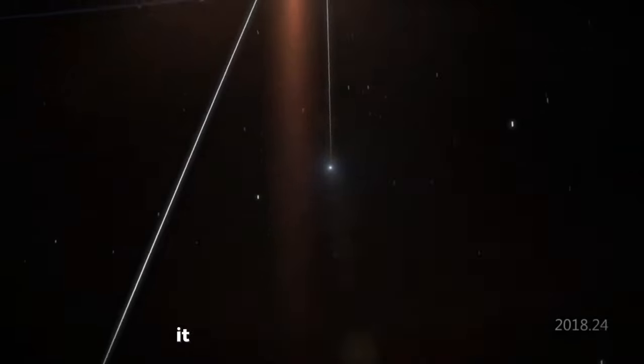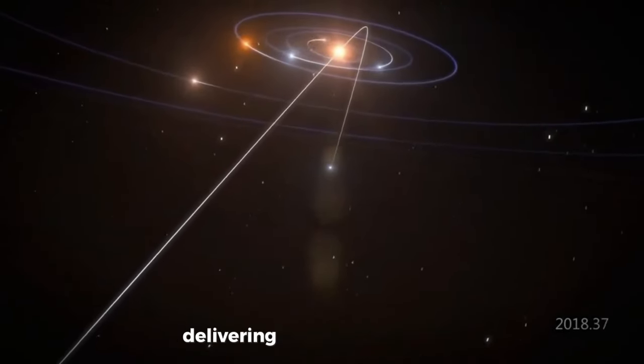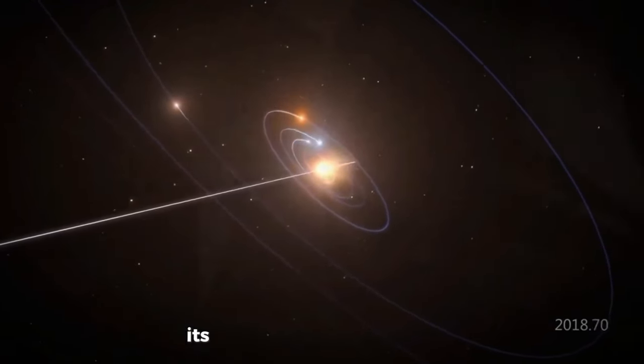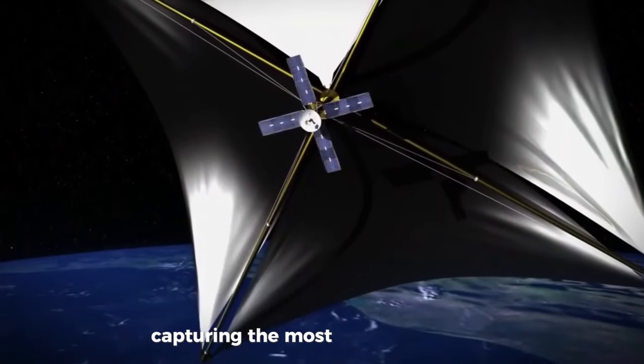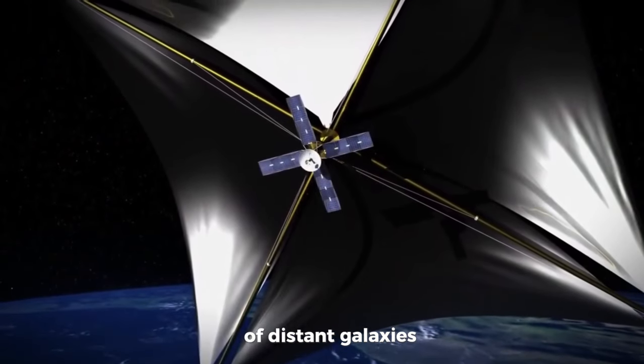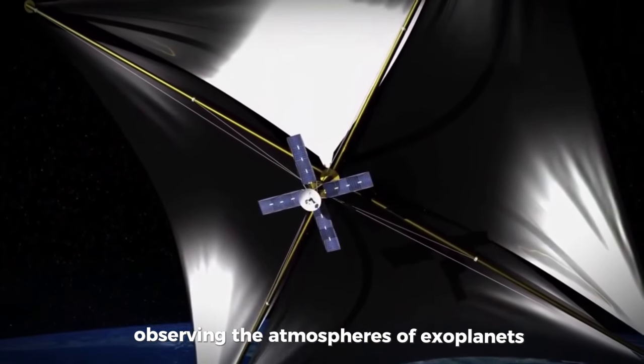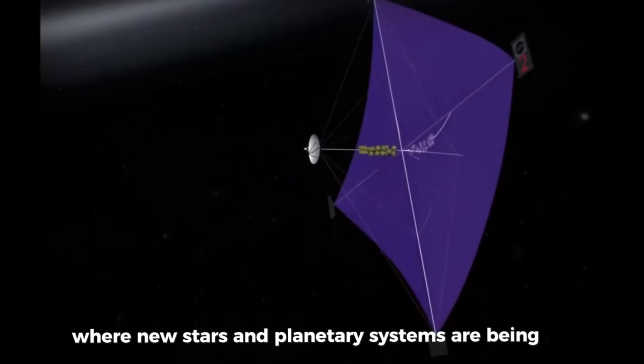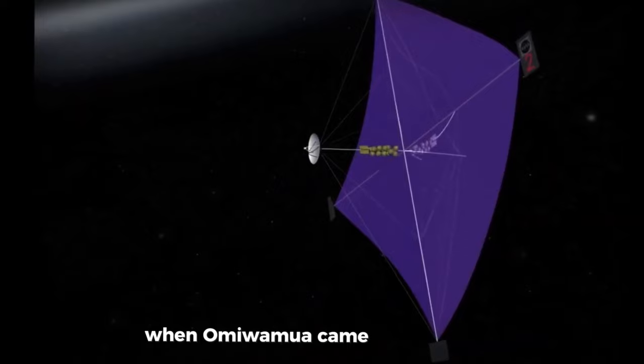Since its deployment, it has begun to fulfill its promise, delivering breathtaking images and data that are reshaping our understanding of the universe. Its early achievements include capturing the most detailed views yet of distant galaxies, observing the atmospheres of exoplanets, and looking into dense cosmic dust clouds where new stars and planetary systems are being born. When Oumuamua came onto the scene, the James Webb Space Telescope became our best bet for getting a closer look.